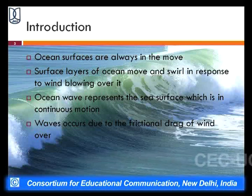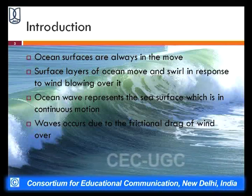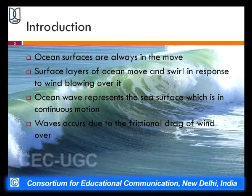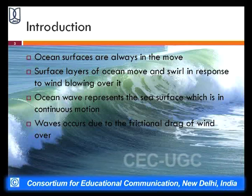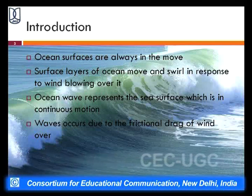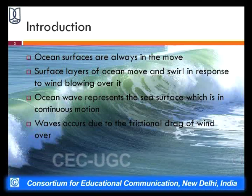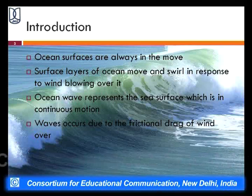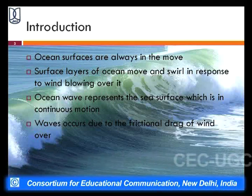Let us look at what is an ocean wave. We know that ocean surfaces are always on the move. This movement is caused by the wind blowing over the surface of the oceans. The surface layers of the ocean are in continuous movement in response to the wind blowing over it. Hence, the ocean surface is a surface in continuous motion, and there are always unstable conditions in the ocean surface because of this wind.